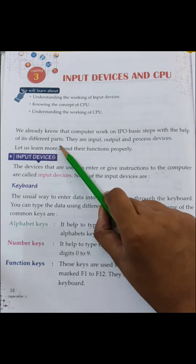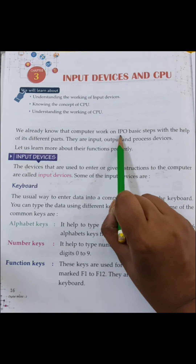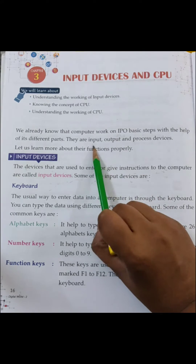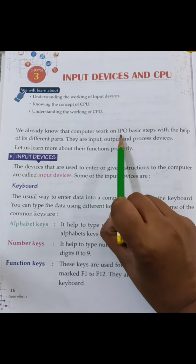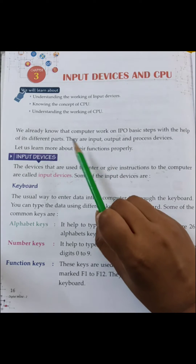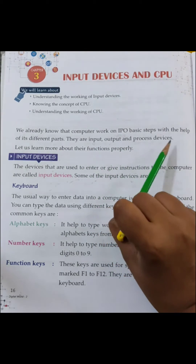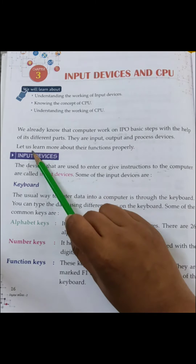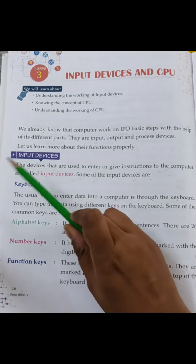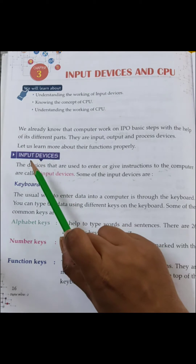आपको पता है computer किसके वर्क करता है? IPO — और इसके full form क्या है? I मतलब Input, P Process, O Output. They are input, output and process devices. Let us learn more about their functions properly. अब इसके बारे में properly और detail में पढ़ेंगे.